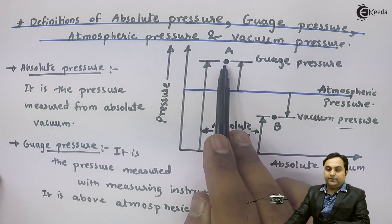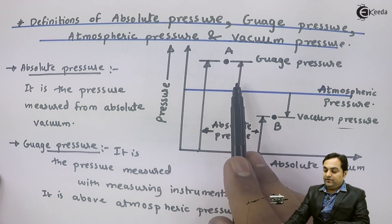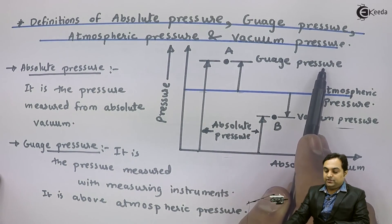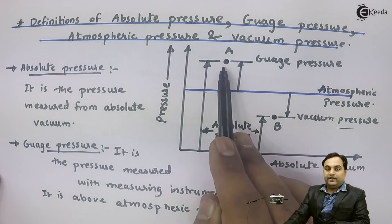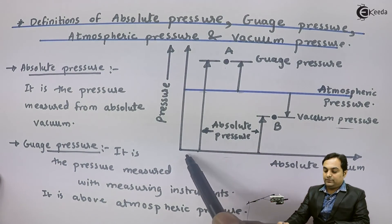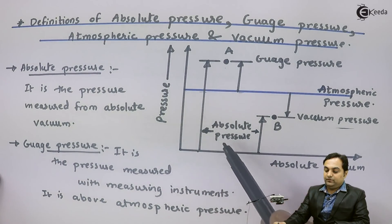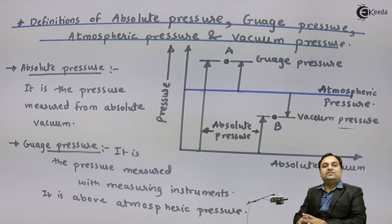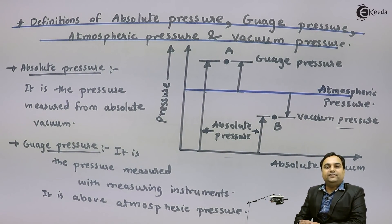For point A, if I am measuring the pressure above atmospheric, that is called gauge pressure. And if the reference is absolute vacuum, then that pressure is called absolute pressure. I hope what I have explained regarding the types of pressure — absolute pressure, gauge pressure, and vacuum pressure — is very clear.